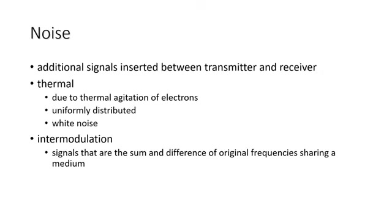Thermal noise is due to thermal agitation of electrons and is present in all electronic devices and transmission media. It is a function of temperature and is uniformly distributed across the bandwidth, hence often referred to as white noise. Thermal noise cannot be eliminated and places an upper bound on communication system performance, particularly significant for satellite communication. When signals at different frequencies share the same transmission medium, the result may be intermodulation noise, which produces signals at frequencies that are the sum or difference of the two original frequencies or multiples thereof, thus possibly interfering with services at these frequencies.